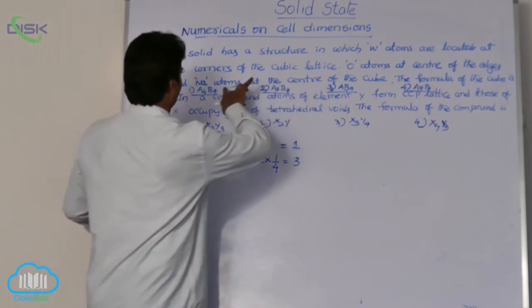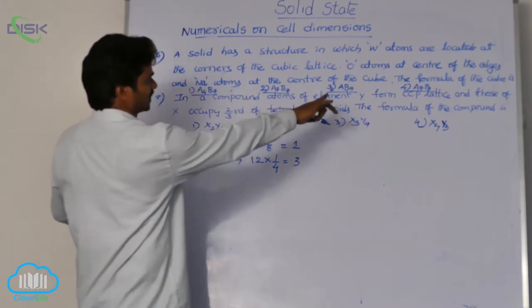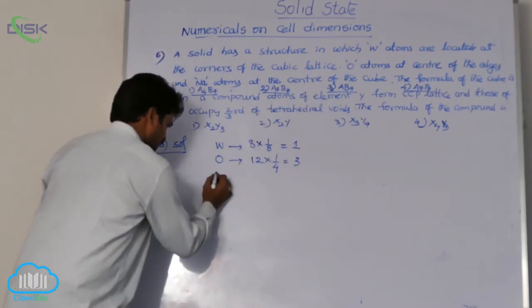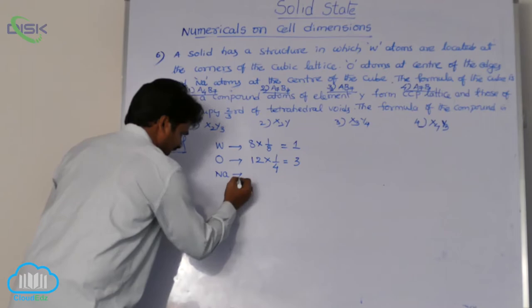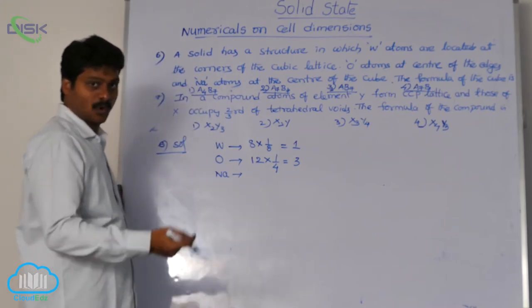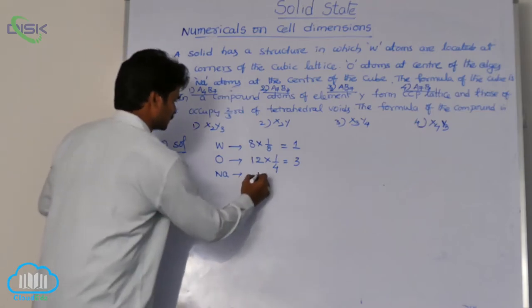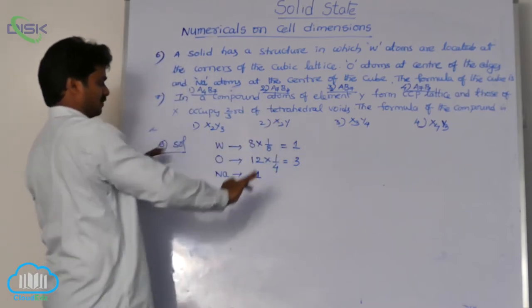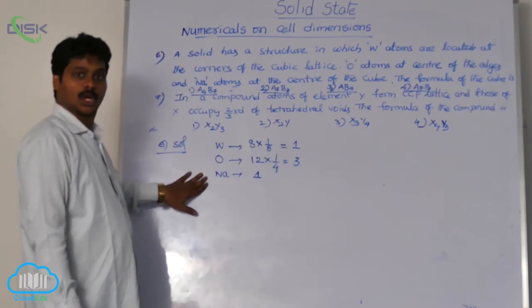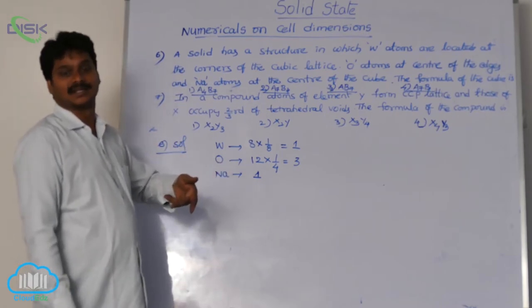Similarly, what is the other atom? Sodium atoms. These are present at the center of the cube. Body center. Body center means it is complete atom. So these are the number of atoms that are located per unit cell in the cubic system.